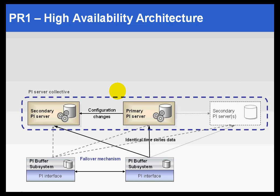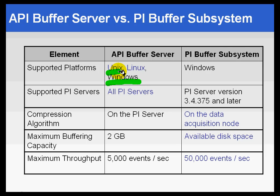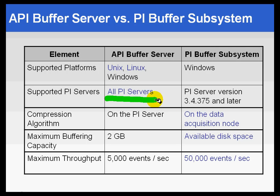Let's go back to our previous comparison table, which describes these two systems. The PI Buffer Subsystem is the newer one and is supported on Windows. The API Buffer Server is also supported on Windows, but additionally supports Unix and Linux — it's the one that's been around longer and has traditionally been used for buffering between servers whether Windows or Unix based. The supported PI Servers list is limited for the new one — you need version 34375 or later, which is the PR1 version, for the PI Buffer Subsystem. For the API Buffer Server, all versions are supported.